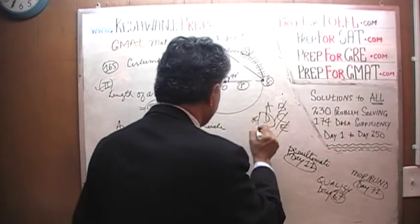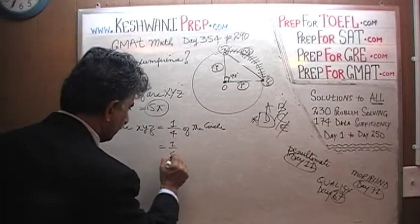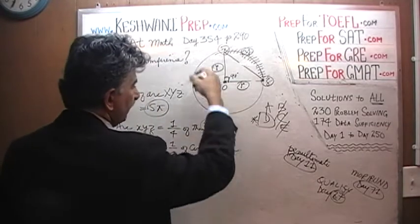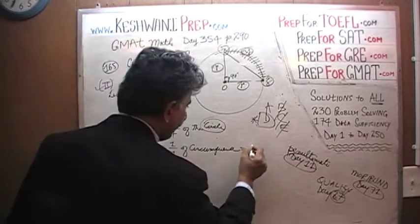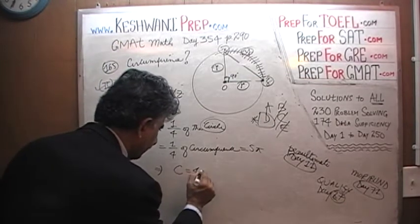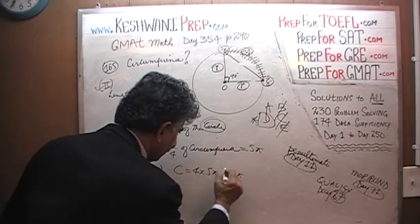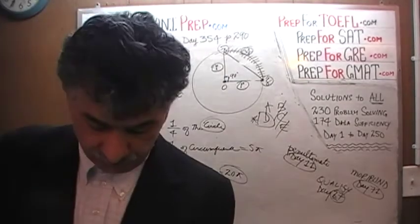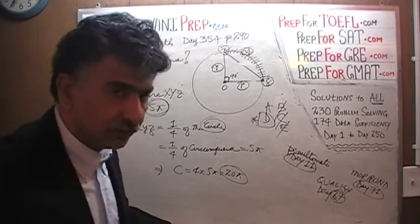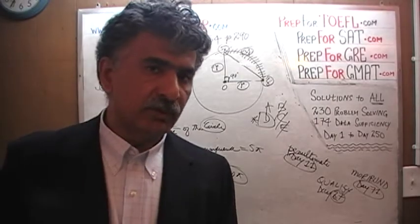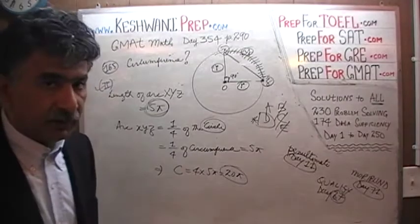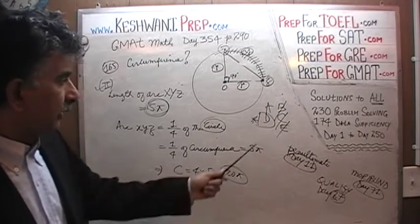The answer is D. One quarter of the circumference is 5 pi, which implies the whole circumference is 4 times 5 pi, which is 20 pi — the exact same value we obtained from the first statement. The two statements never contradict each other. If the first statement told us the circumference was 20 pi, we find the exact same value from the second statement. The answer is D.